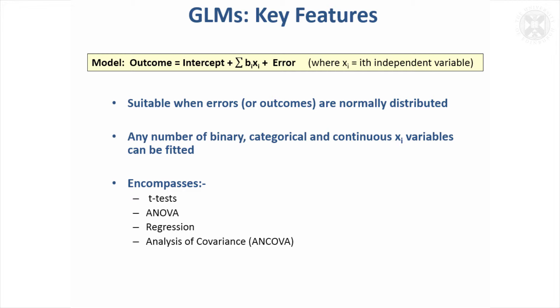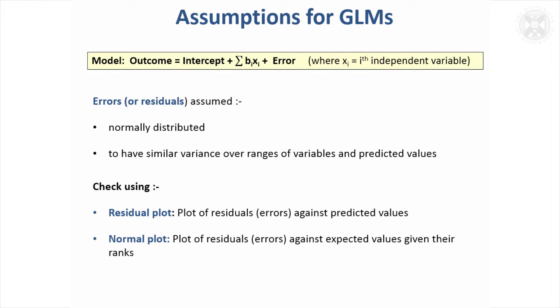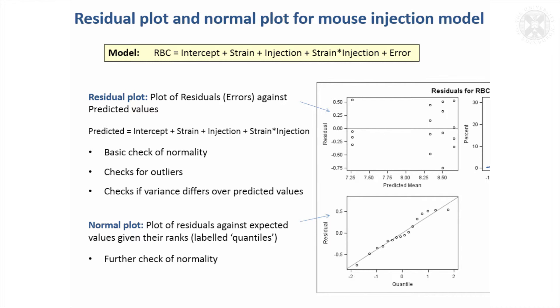Thinking about that assumption that the errors are normally distributed—sometimes these errors are called residuals—they're expected to be normally distributed and to have similar variance over the range of variables and predicted values. Usually people check this using a residual plot, which is simply a plot of residuals against their predicted values. There's also a normal plot that checks normality more closely—it's a plot of residuals against their expected values given their ranks.